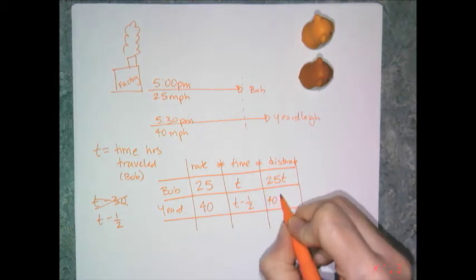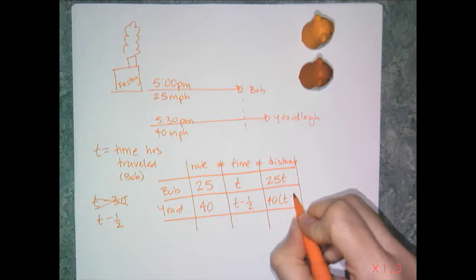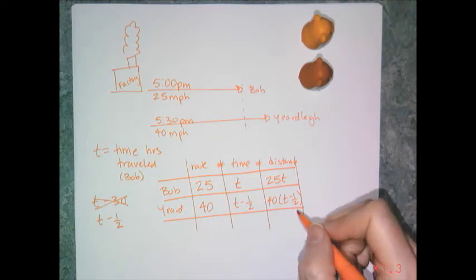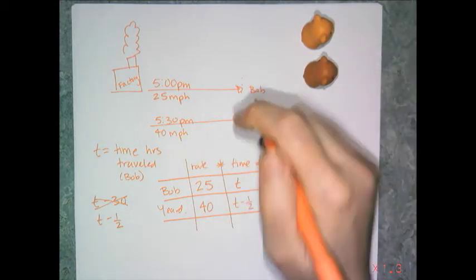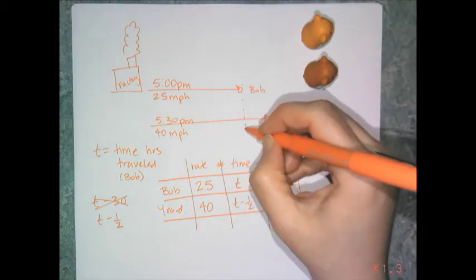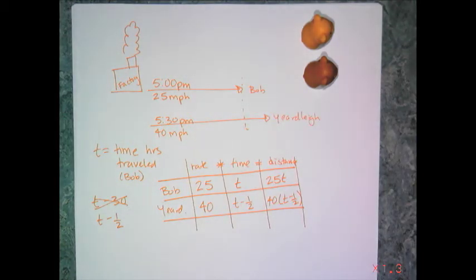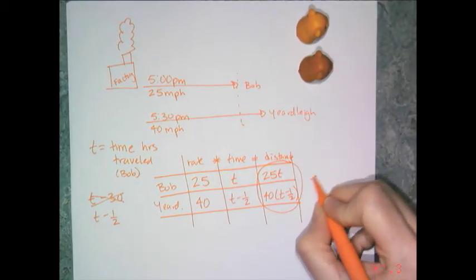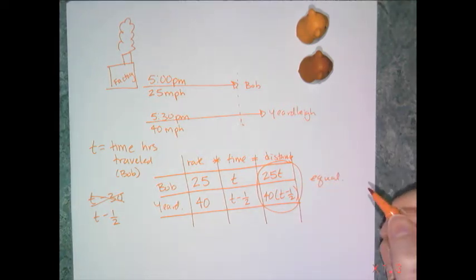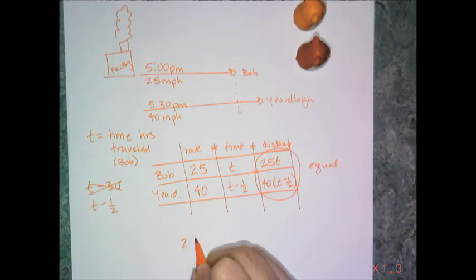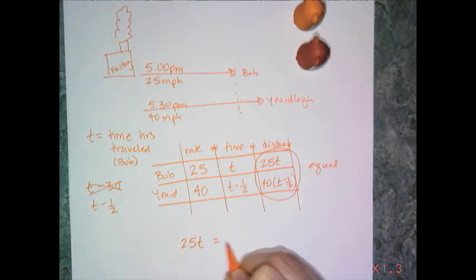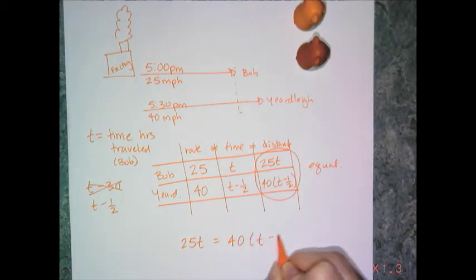Be very conscious of units. Bob's distance traveled is 25T, and Yardley's distance traveled is 40 times (T minus one-half). Since I only have one variable, I only need one equation. I use the fact that Yardley has to catch up to Bob, so these two distances have to be equal. The equation to solve is 25T equals 40 times (T minus one-half).